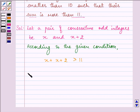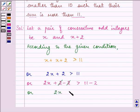Let us solve it. We have 2x plus 2 is greater than 11. On subtracting 2 from both sides, we have 2x plus 2 minus 2 is greater than 11 minus 2. After simplification, 2x is greater than 9.